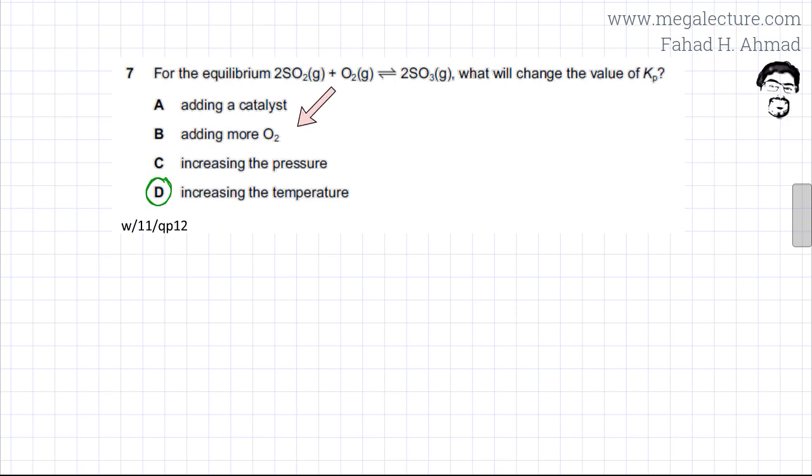Increasing pressure, adding more O2, or adding a catalyst would not affect the equilibrium constant because the equilibrium would shift accordingly and the ratio of products to reactants would always become constant again.